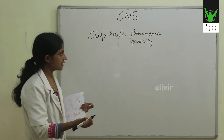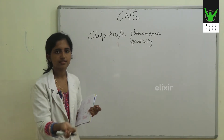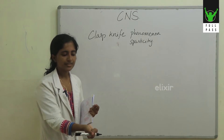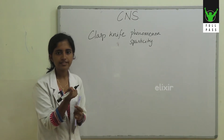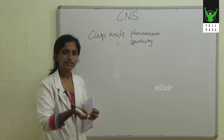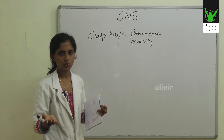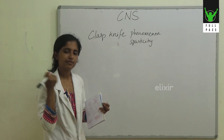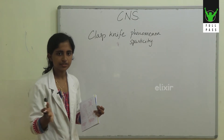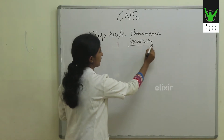Spasticity means, when considering flexion of the elbow, during the initial phases of flexion there will be resistance, and during the later stages the resistance will go off and we will be able to flex the arm freely without any kind of resistance. That is spasticity.